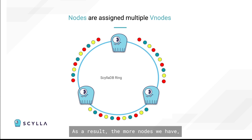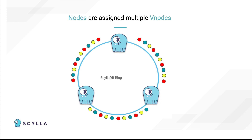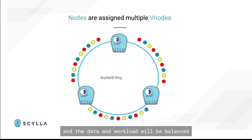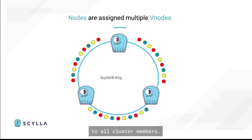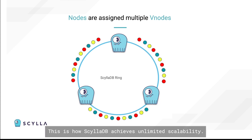As a result, the more nodes we have, the more V-nodes we will have in the token ring, and the data and workload will be balanced to all cluster members. This is how ScyllaDB achieves unlimited scalability.